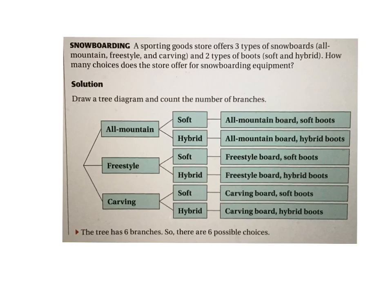The problem says a sporting goods store offers three types of snowboards - all mountain, freestyle, and carving - and two types of boots: soft and hybrid. How many choices does the store offer for snowboarding equipment? We took the three snowboard options and showed that each can be paired with soft or hybrid boots, giving you one, two, three, four, five, six choices. That's called a tree diagram because it's like a tree with branches - not the best way to count, but it is a way.